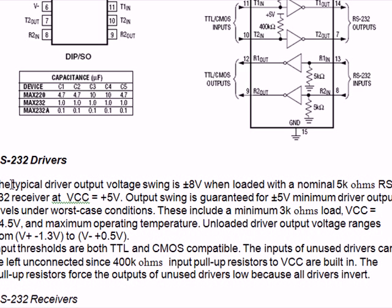The typical driver output voltage swing is plus or minus 8 volts when loaded with a nominal 5 kilohm resistor. Though it is open-circuit voltage at 10 volts, the driver output voltage swing is plus or minus 8 volts with a 5k load. For the RS-232 receiver at VCC of 5 volts, output swing is guaranteed for plus or minus 5 volt minimum driver output levels.